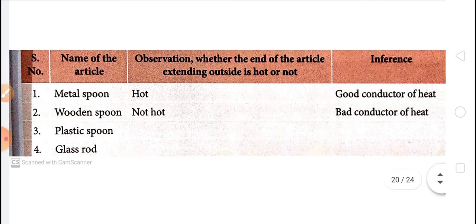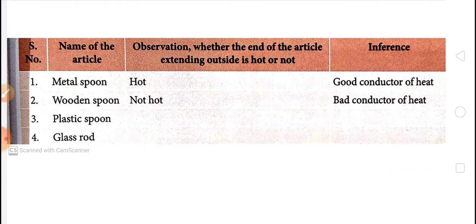The metal spoon — metals are good conductors of heat, so the metal spoon got heated and we can feel it is hot. But wood is a bad conductor; it does not allow heat to pass through it. Such materials which do not allow heat to pass through them are called insulators. Wood is an insulator, so it does not get hot. For the plastic spoon, you can observe and write. If the substance got hot, you can say it is a good conductor of heat. So metal is a good conductor of heat and wood is a bad conductor of heat.